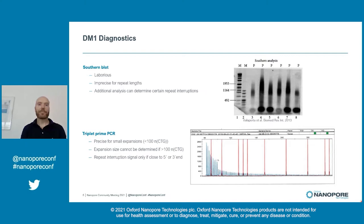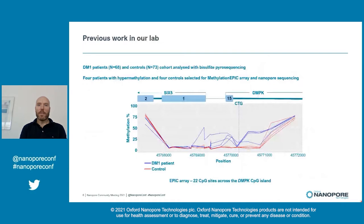We and others have previously looked at methylation in DM1 patients, and from our cohort, which was analyzed initially with bisulfite pyrosequencing, we selected four hypermethylated patients and four controls. We analyzed these first using methylation EPIC arrays and subsequently with nanopore sequencing.